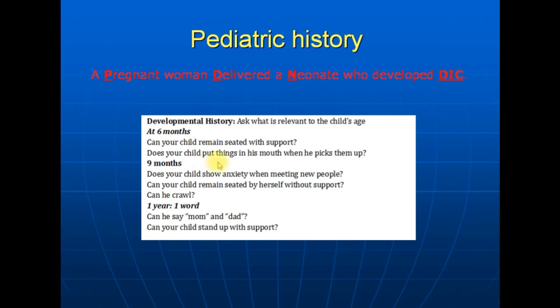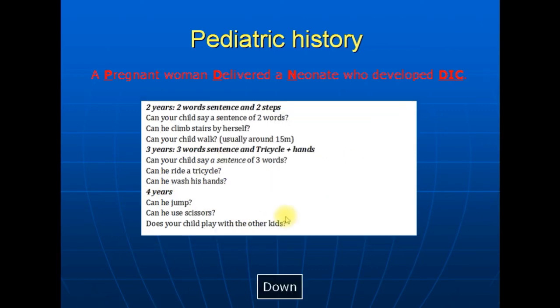Was Tom a healthy kid at birth? Did he feed well after delivery? When did he have the first bowel movement? Did your child have any yellowish or blueish skin discoloration at birth? The following are questions for the developmental history, and you should ask according to the child's age. For example, if in the doorway information the child is one year old, ask those questions only.